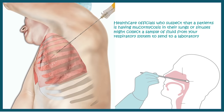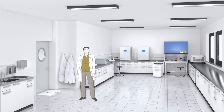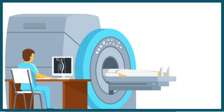For detection of mucormycosis — for example pulmonary mucormycosis — a biopsy can be taken from the lung. For rhinosinusal mucormycosis, a sample can be taken from the sinuses. These samples are then sent to the lab where culture experiments are performed, or microscopy is used to determine whether the fungus has infected the body. A doctor might also prescribe a CT scan in specific cases.